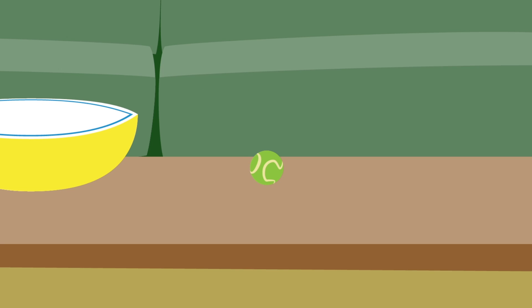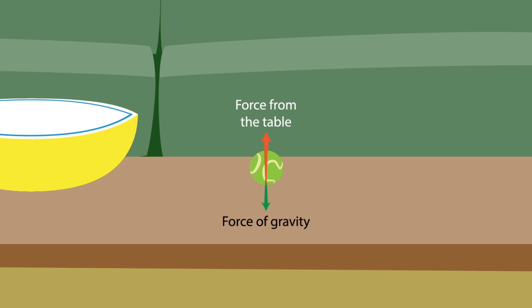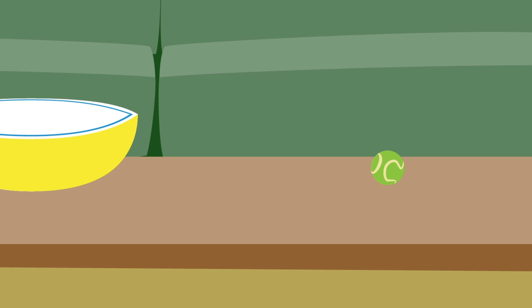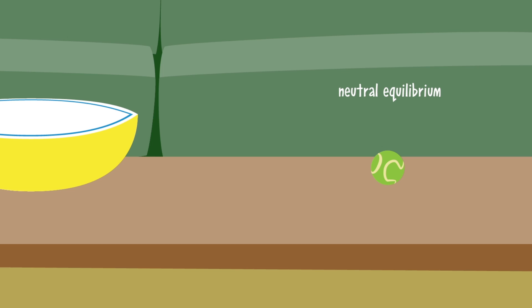One more quick example. Place your ball on a flat surface. If it's truly flat, the ball will stay where you put it — it's in equilibrium. The forces acting on it balance out. Move the ball a few inches away from its original position and let it go. If your entire surface is flat, the ball stays in a new position. It doesn't tend to move toward or away from its equilibrium position. This is called neutral equilibrium — any disturbance from an equilibrium position puts the ball in a new equilibrium position.